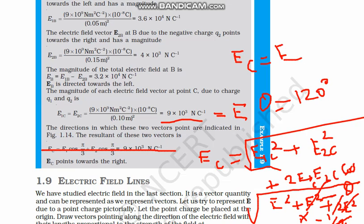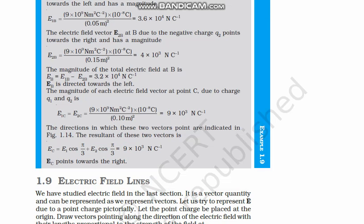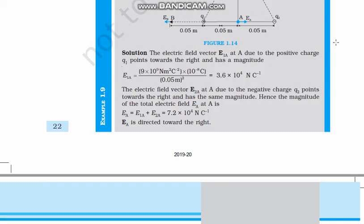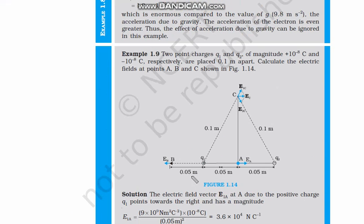which is equal to 9 into 10 to power 3 Newton per coulomb. So ec is equal to 9 into 10 to power 3 Newton per coulomb. And what is the direction of this? Let us see what would be the direction. For first, the direction was towards right. For next one, again right. So, the total direction of the electric field would be in right. As here, you can see this one is upward, this is downward and the middle path is on the right side. So, the direction would be on the right side.